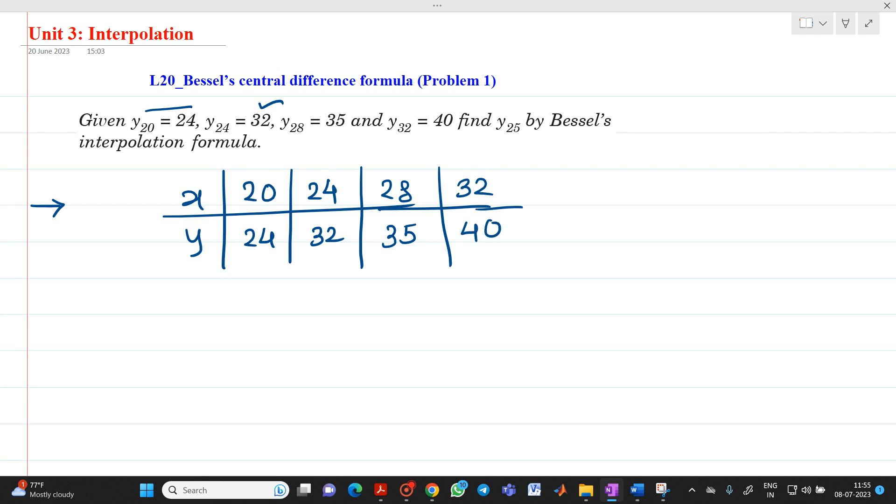And we have to find out what is the value of y(25). That is, when x = 25, what is the value of y with the help of Bessel's interpolation formula. So 25 will be in between this. So let me take this as x₀, this is x₁, this is x₂.